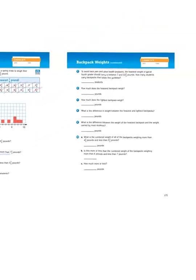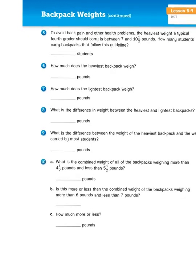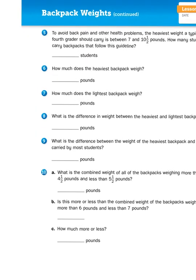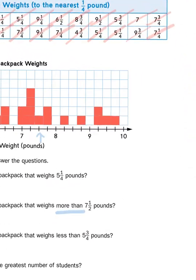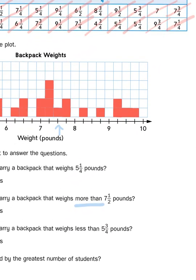The same is true for problem number six. How much does the heaviest backpack weigh? So we are looking for the largest number within the range of weights recorded, and that would be this one right over here because it's at the right hand side of our number line, and that's nine and three quarters pounds.